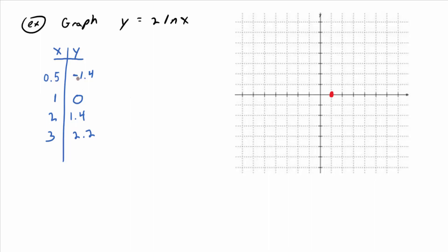And then at 0.5, it's down at negative 1.4. 0.5, negative 1.4, right about there. And then at 2, 1.4, right about there maybe. And then at 3, 2.2. So 1, 2, 3 and 1, 2.2.